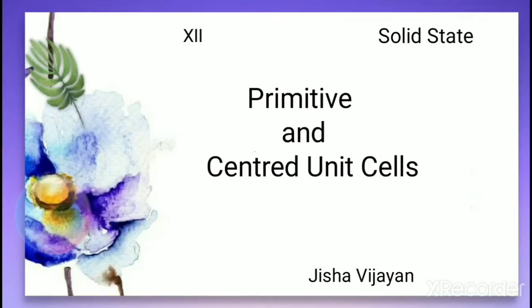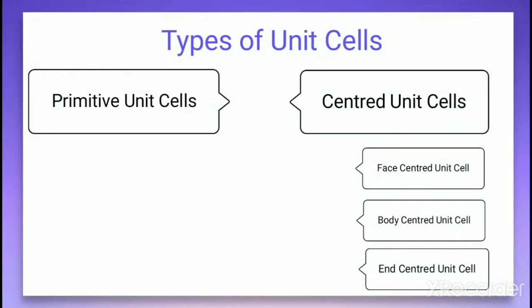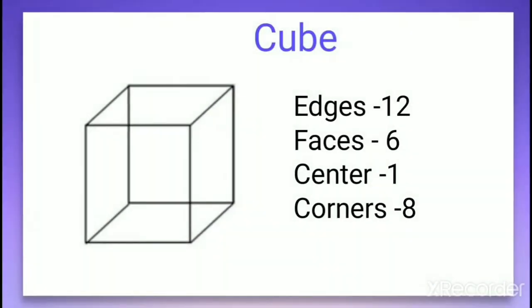In the last video we discussed about unit cells. Let us discuss in more detail about primitive and centered unit cells. Unit cells are of two types: primitive unit cells and centered unit cells. The centered unit cell means the particles are found at the center of the unit cell. It is further classified as face-centered unit cell, body-centered unit cell, and end-centered unit cell.